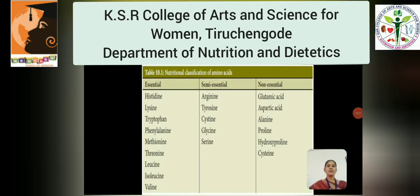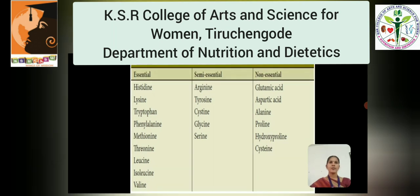The nutritional classification of amino acids includes essential amino acids, semi-essential or conditionally essential amino acids, and non-essential amino acids. The essential amino acids are Histidine, Isoleucine, Leucine, Lysine, Methionine, Phenylalanine, Threonine, Tryptophan and Valine. The conditionally essential amino acids are Arginine, Cystine, Glycine, Proline and Tyrosine.